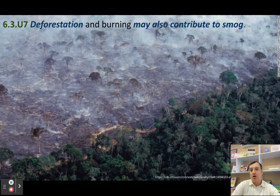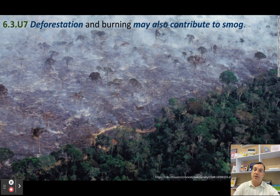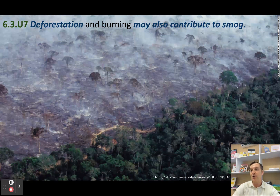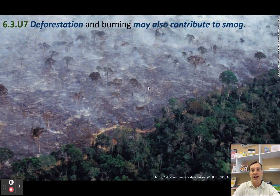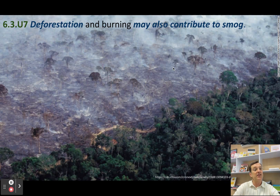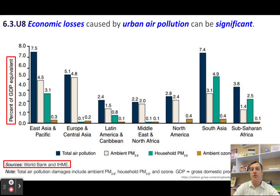You'll also get smog from things happening outside of cities. In several different places where I've lived, including here in Cambodia, you've got farmers who will burn the land in preparation for planting. All of that smoke — that particulate matter — will drift into the cities and can contribute to smog.